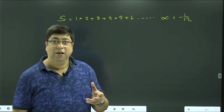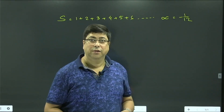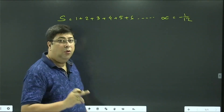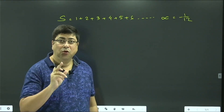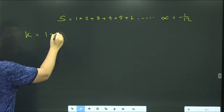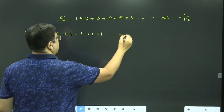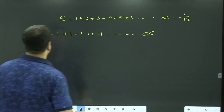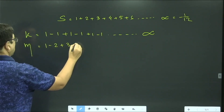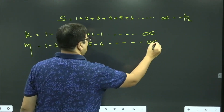To prove this, we need to work on two other series. Let us consider: K = 1 - 1 + 1 - 1 + 1 - 1 + ... up to infinity, and M = 1 - 2 + 3 - 4 + 5 - 6 + ... up to infinity.